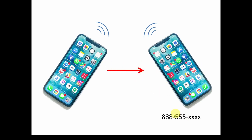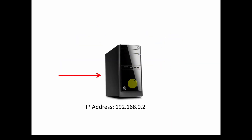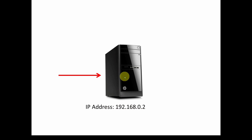We're going to need to have an address for a device if we're going to talk to it. For example, here we've got our computer, and if we want to talk to that computer, we need some sort of address like a phone number. Typically what we're going to use is what's called an IP address — a sequence of numbers, IP standing for internet protocol. It's very much like a phone number but used for network communications.